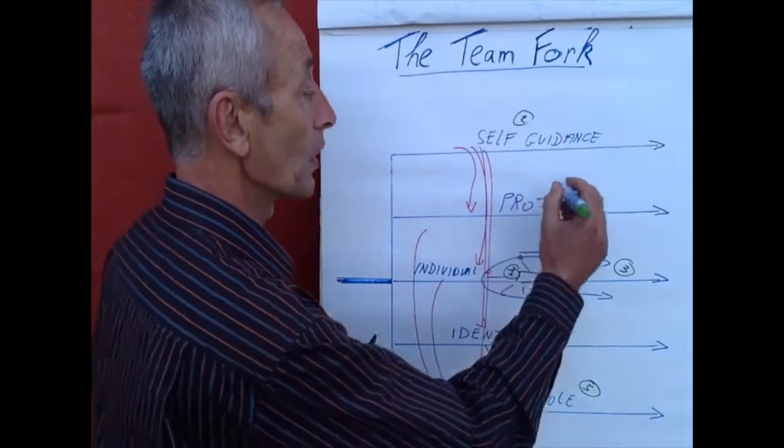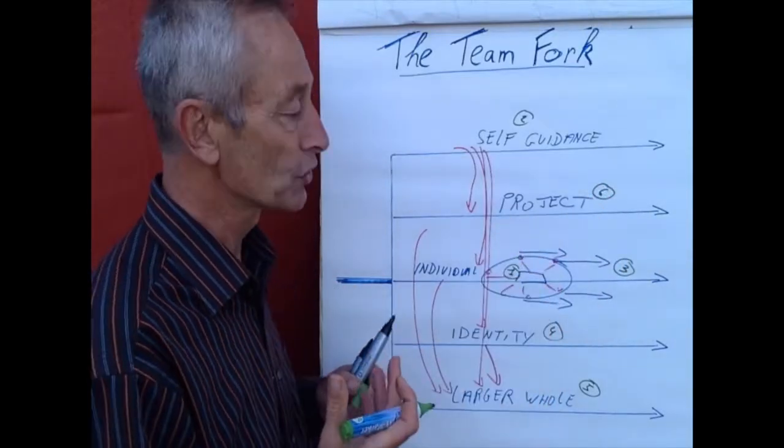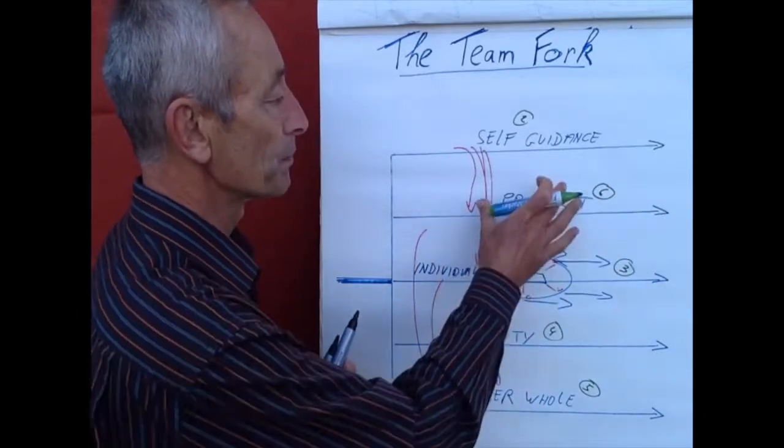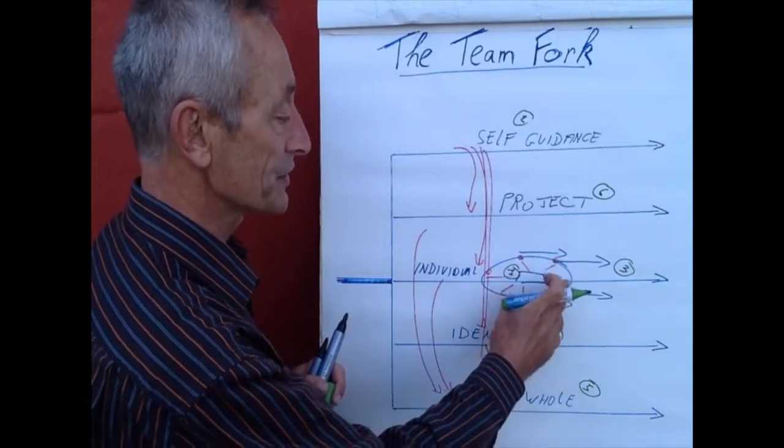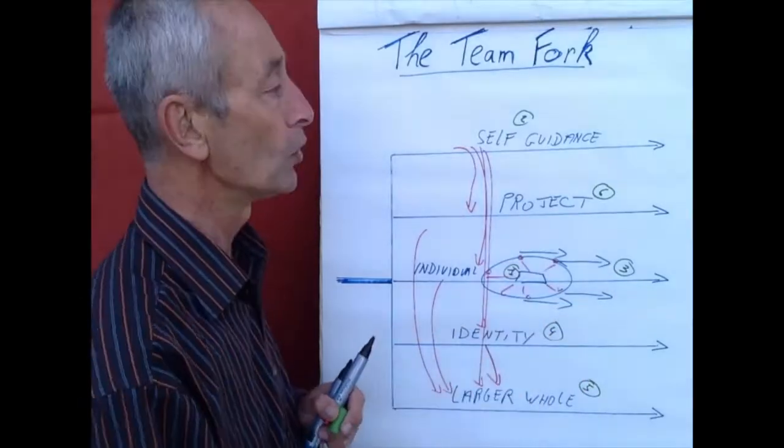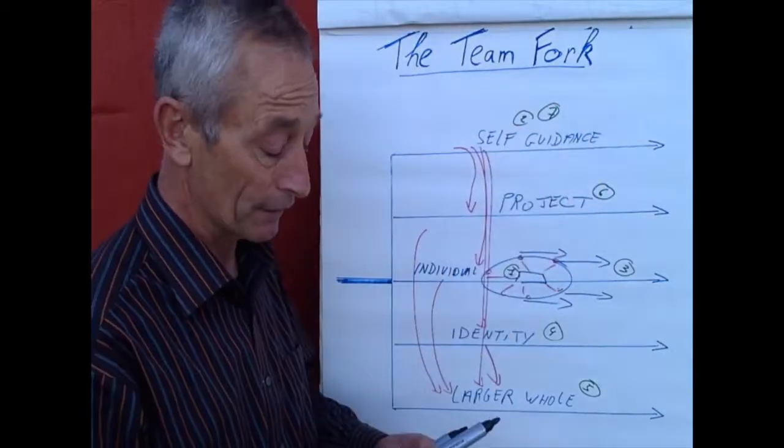And it is only in the sixth step that we are coming back to the action, to the action-oriented collaboration with a specific outcome. So the project is embedded in all those other layers. The individuals, the team identity and the larger whole. And it is at the end we reflect on the improvement in self-guidance.